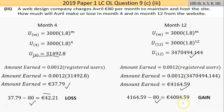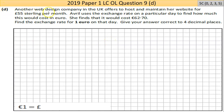For month twelve, she makes a much larger amount from users, pays out 80 euros to the website, and nets about 4,000 euros profit. That's tricky but once you get your head around what's going on it becomes more obvious. Part D: another web design company in the UK offers to host and maintain her website for 55 sterling per month, where sterling and euro are not equal - there's a conversion factor. Avril uses the exchange rate on a particular day and finds it would cost 62.70 euros.